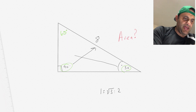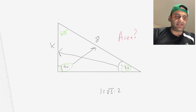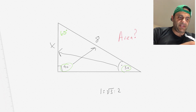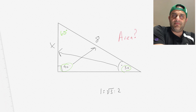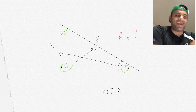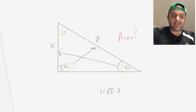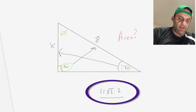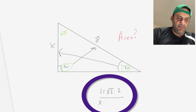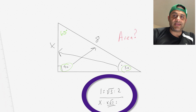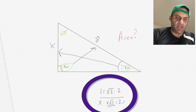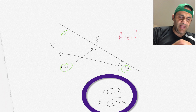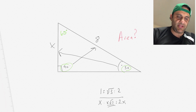The smallest side opposes the smallest angle, which is 30 degrees — we'll call that side X. The middle side opposes the middle angle, which is 60 degrees. So using the ratio: the smallest side is X, the middle side is X times the square root of 3, and the hypotenuse is 2 times X.